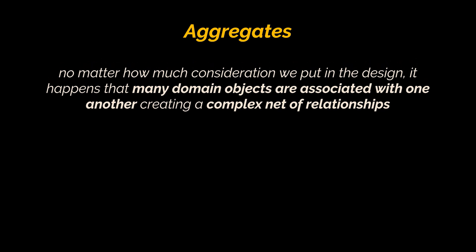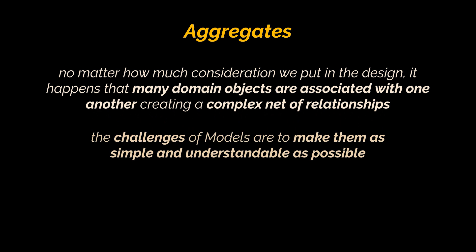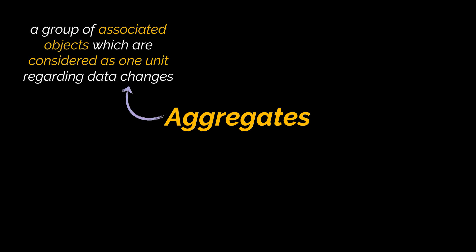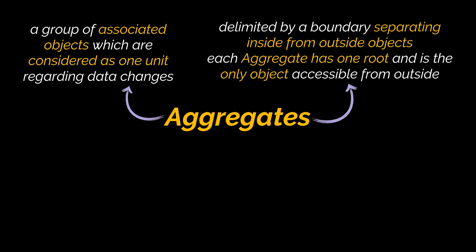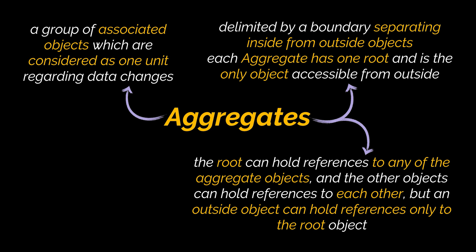A model can contain many domain objects. No matter how much consideration we put in the design, many objects become associated with one another creating a complex net of relationships. The challenges of models are most often not to make them complete enough, but rather to make them as simple and understandable as possible. It is difficult to guarantee the consistency of changes to objects in a model with complex associations. To solve this we can use aggregates. An aggregate is a group of associated objects which are considered as one unit regarding data changes, delimited by a boundary which separates objects inside from those outside.